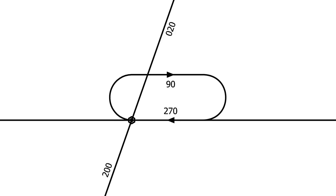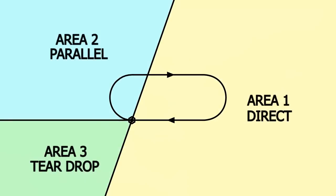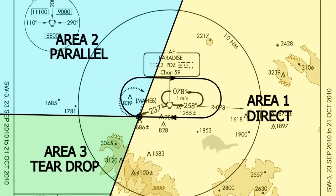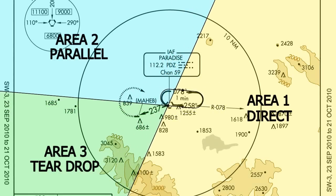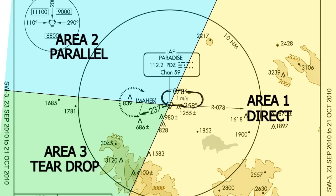We erase the right part of our inbound line, and now we are left with three areas. From area 1 we do a direct entry, from area 2 a parallel entry, and from area 3 a teardrop entry. If we take these areas and put them over the Corona VOR approach plate, rotating them until the racetracks correspond with each other, we can clearly see the areas we have drawn.